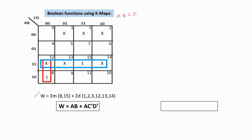For the boolean function of W = sigma M(8, 15) plus don't cares, we place 1s at positions 8 and 15 and don't cares at the unused positions. We then form groups. Position 8 is adjacent with a don't care to form one group of two (a pair). Position 15 is adjacent with another don't care to form a second group. So we have two groups.